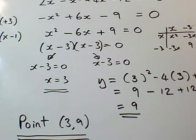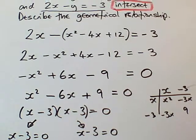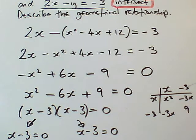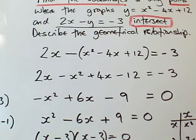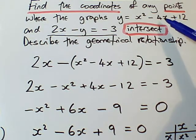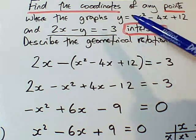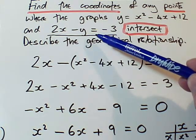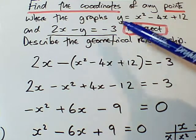But I had to do more than that. I had to describe the geometrical relationship between the two graphs. Well, if we go back to our equations here, we had a quadratic graph because it had an x² in it. And this graph, I could just rearrange to get y equals mx plus c, so this is a line. So if I've got a parabola and a line...